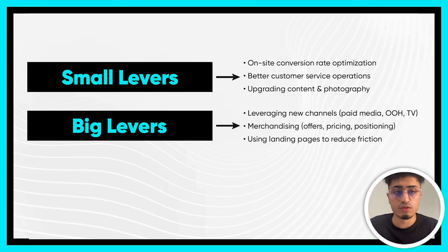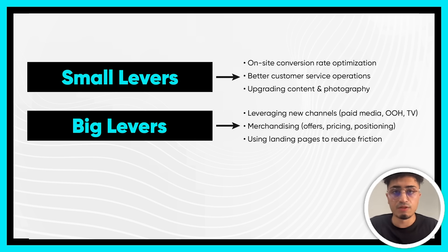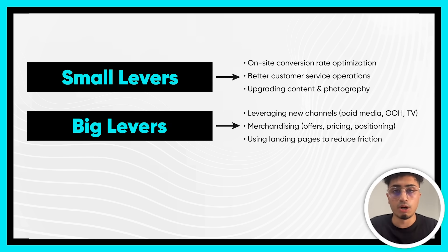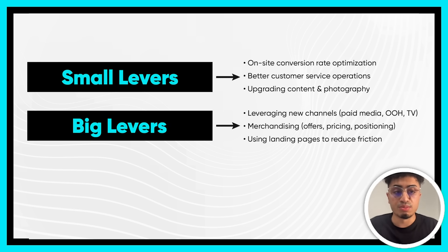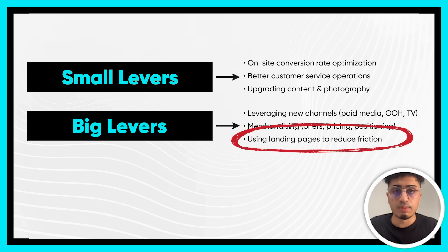Some small levers are on-site conversion rate optimization, better customer service operations, upgrading content and photography. Big levers — and this is what I love — include leveraging new channels. If you're doing paid advertising online, you can go offline and utilize TV and radio. Then you can focus on merchandising: your offers, your positioning, your pricing. And my favorite: utilizing landing pages.